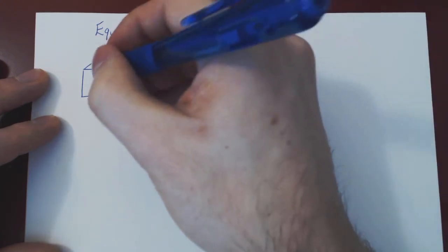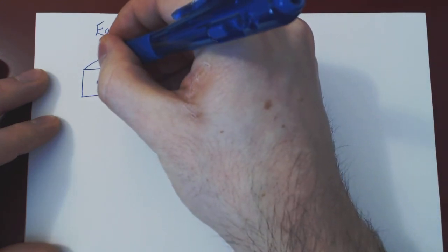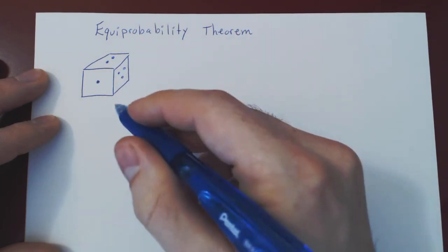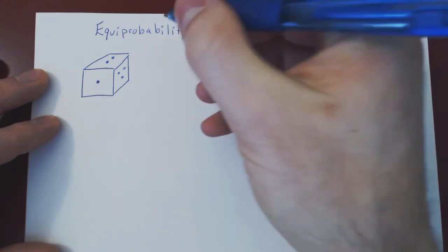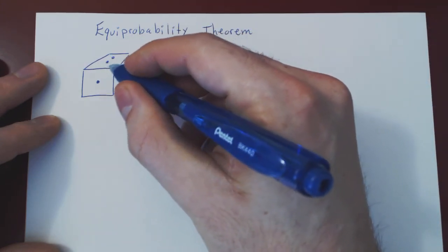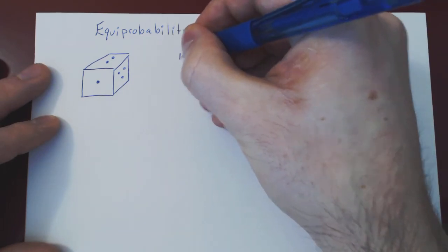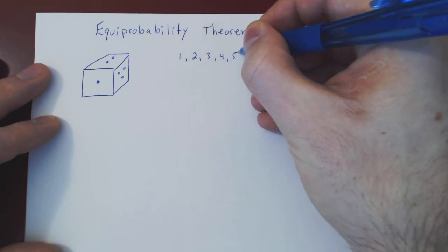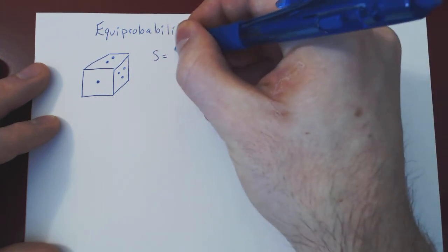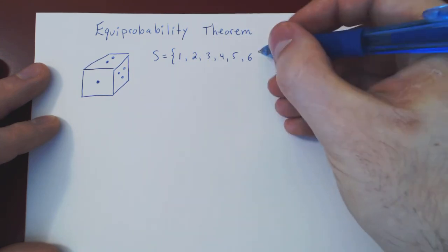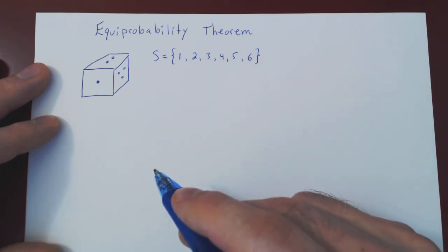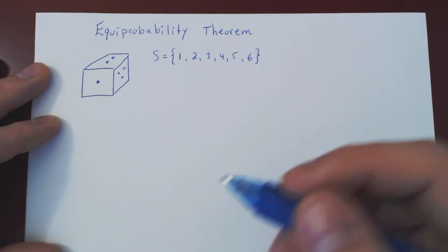Suppose you have a regular six-faced die. Of course, the faces are numbered from 1 through 6. The experiment consists of rolling a regular die only once. The possible outcomes — observing the figure showing up on the upper face — are 1, 2, 3, 4, 5, or 6. This is your sample space. The sample space S consists of the set of all possible outcomes, so we have 6 possible different outcomes.